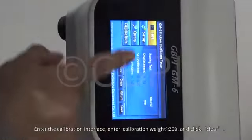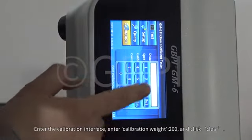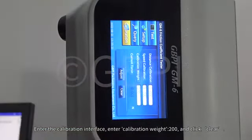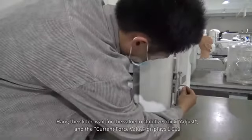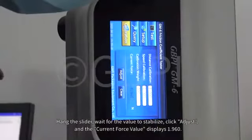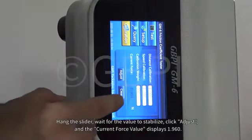Enter the calibration interface and enter calibration weight 200, then click OK. Hang the slider, wait for the value to stabilize, click adjust, and the current force value displays 1.960.